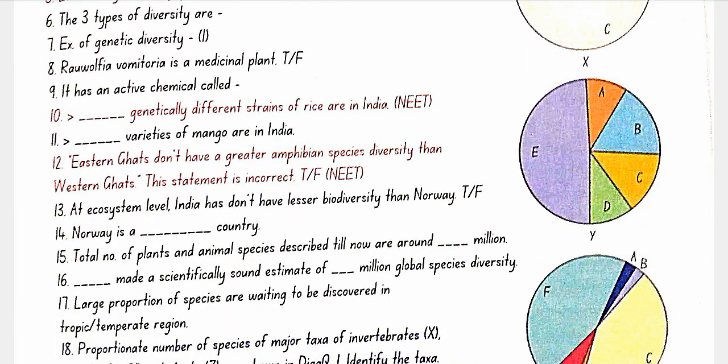An example of genetic diversity is Ravolfia vomitoria, a medicinal plant with an active chemical called reserpine. In India, there are greater than 50,000 genetically different strains of rice, and greater than 1,000 varieties of mango.